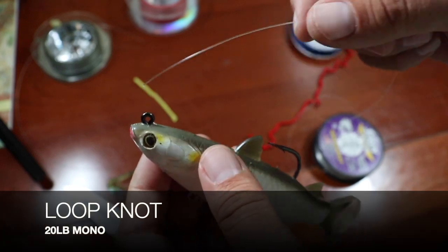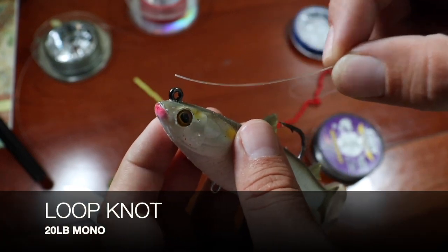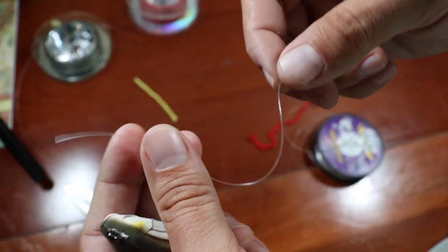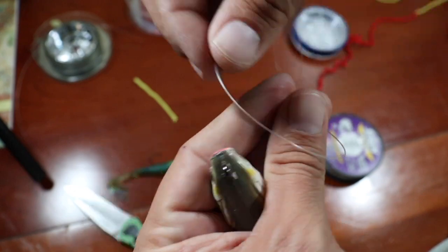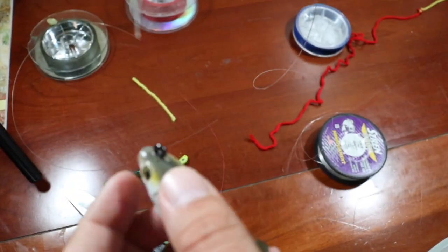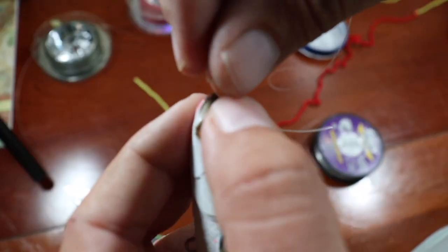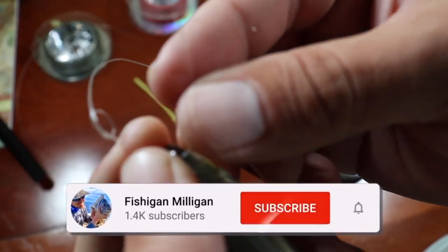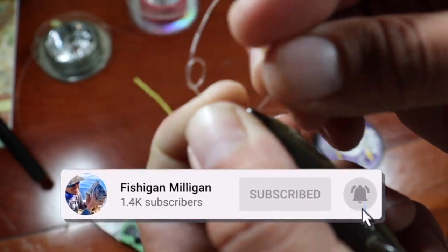The other knot I like to use for the main knot here is the loop knot. And what I do is I get my mono and I tie a circle around it like that. And then I pinch it, hold it, and put it through the line. I'm going to get that tag. I'm going to go back through that circle.